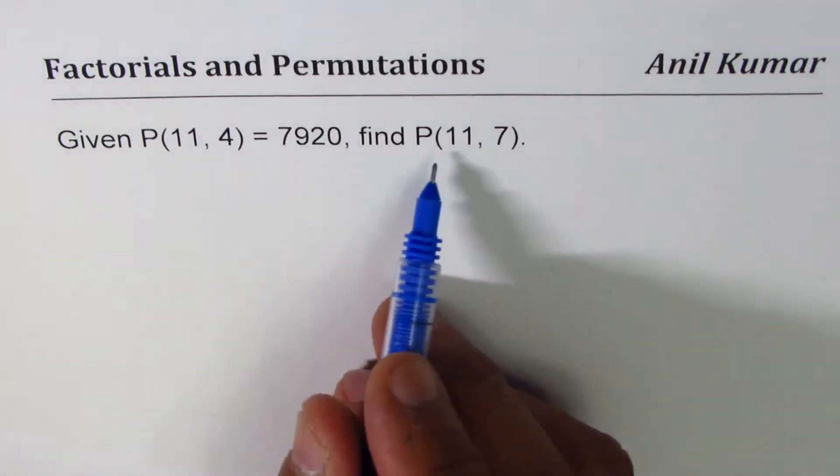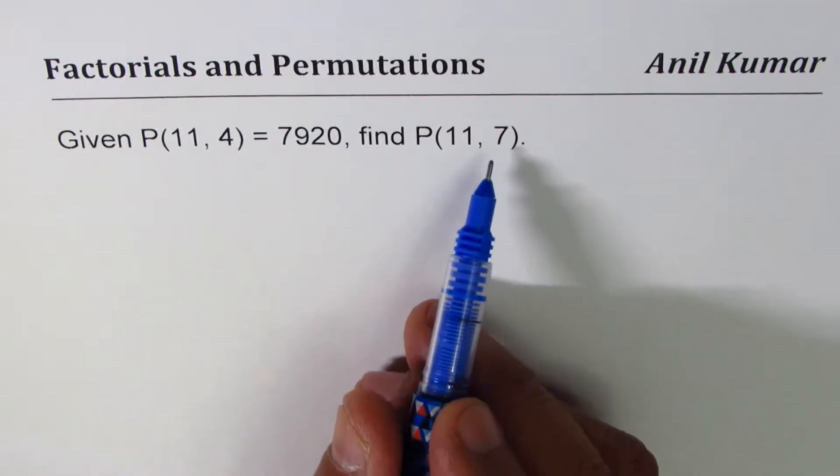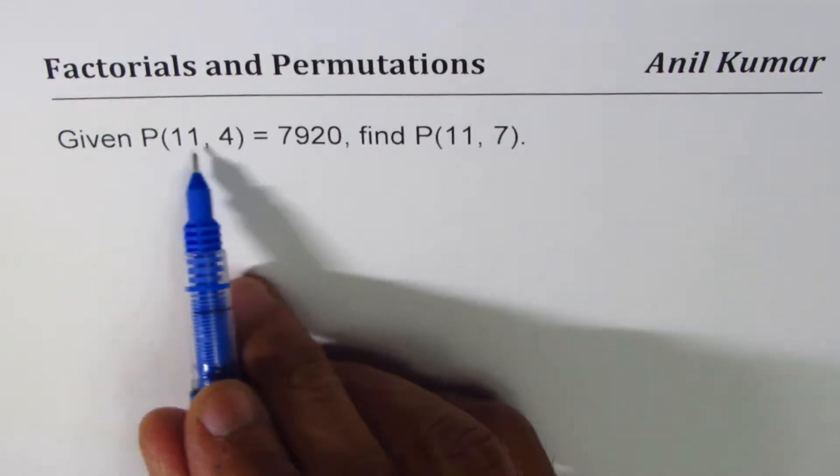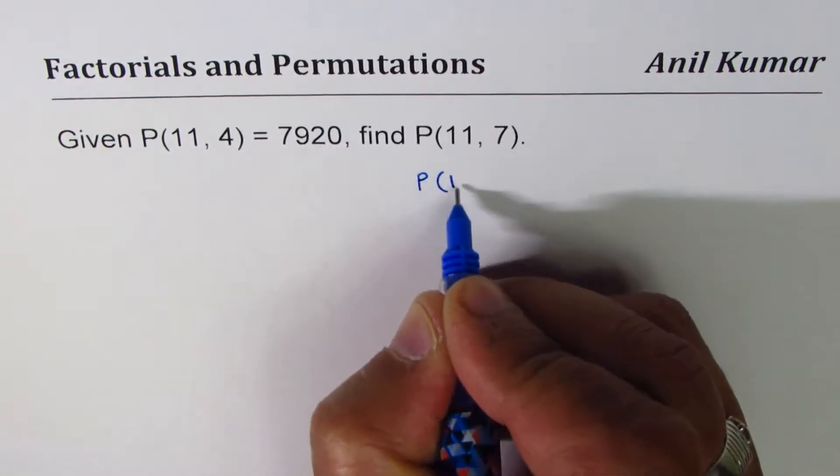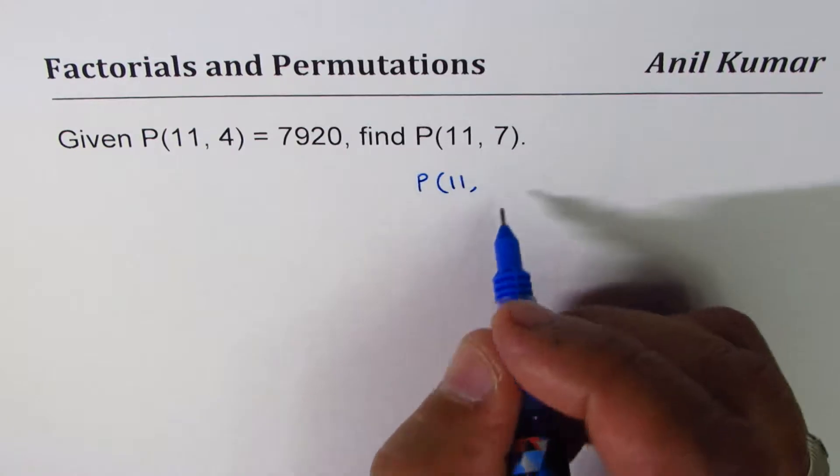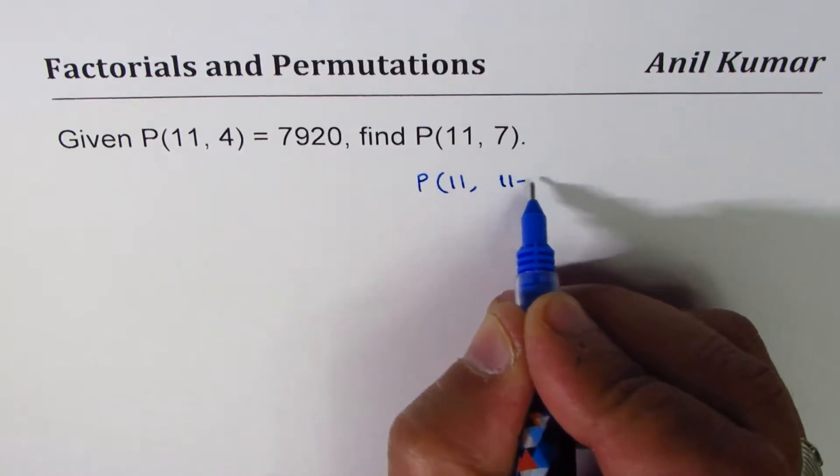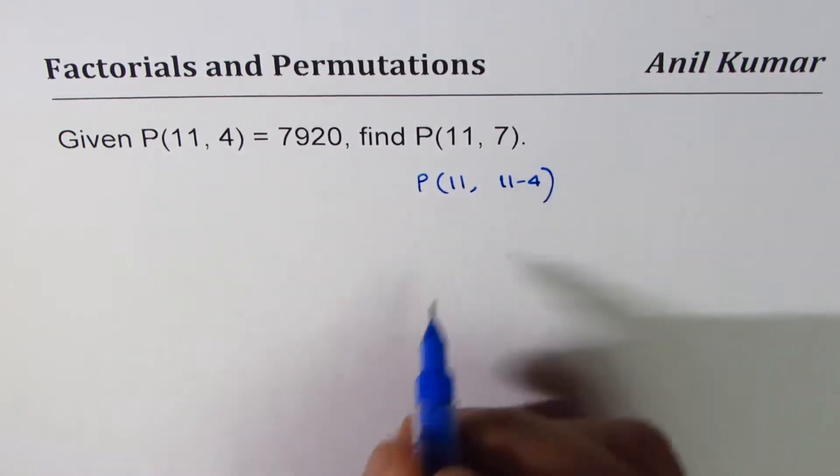Well, to find P(11,7), you notice that 7 is 11 minus 4, correct. It is like the same as P(11,7) could be written as 11 minus 4.